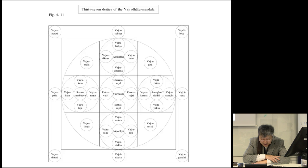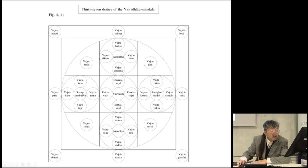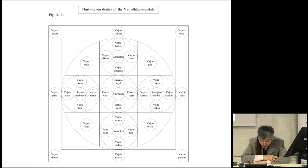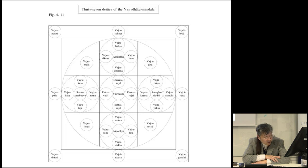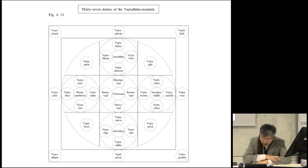The Vajradhatu Mahamandala consists of 37 deities — the so-called Kongokai 37-son in Japan. These include five Buddhas: Vairocana, Akshobhya, Ratnasambhava, Amitabha, and Amoghasiddhi; 16 great bodhisattvas surrounding the four Buddhas; four paramita goddesses arranged around Vairocana; four inner and four outer offering goddesses arranged in intermediate directions — totaling eight goddesses — and four gate keepers. The Vajradhatu Mandala thus consists of 37 deities as its very basic pattern.